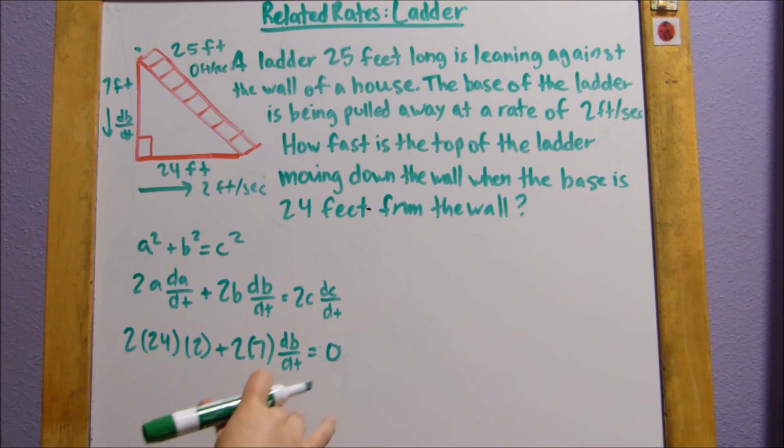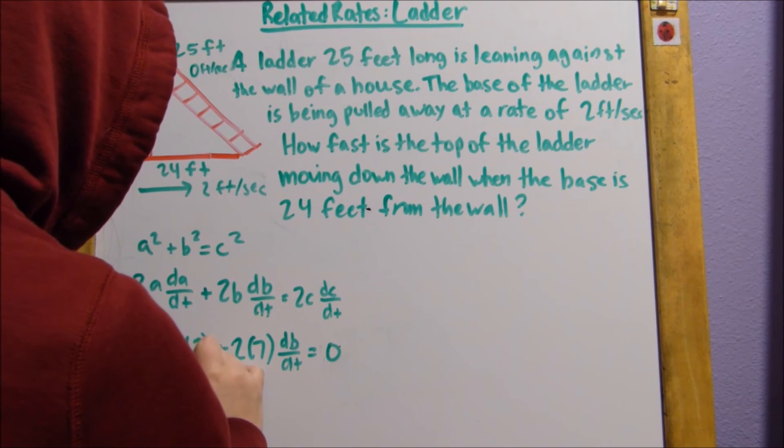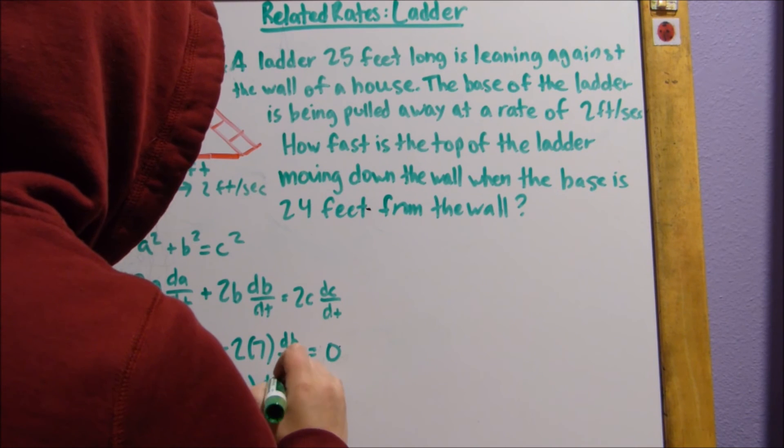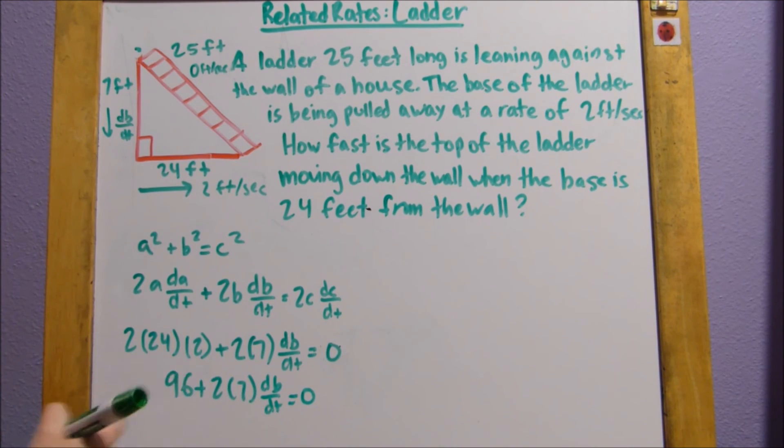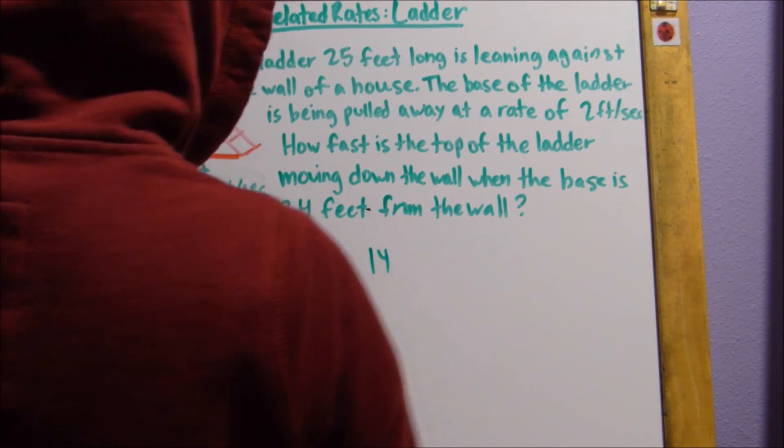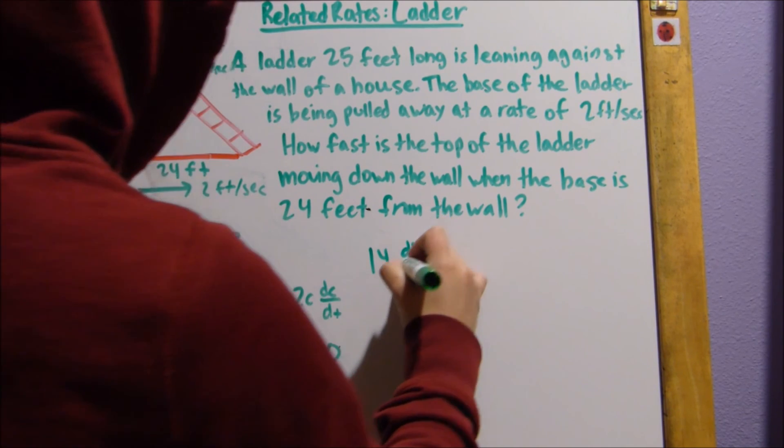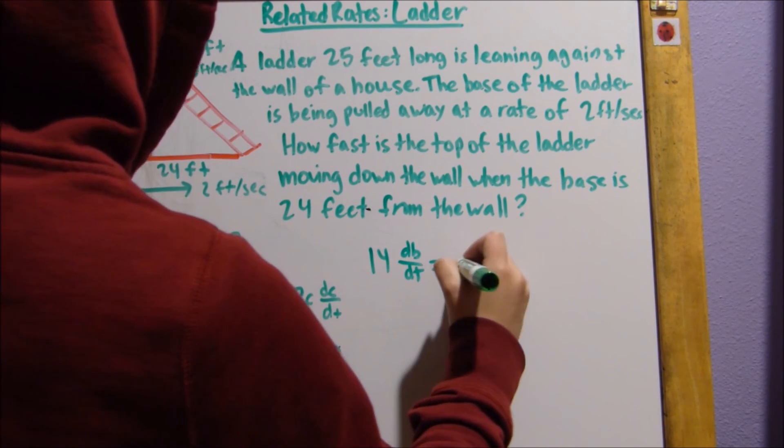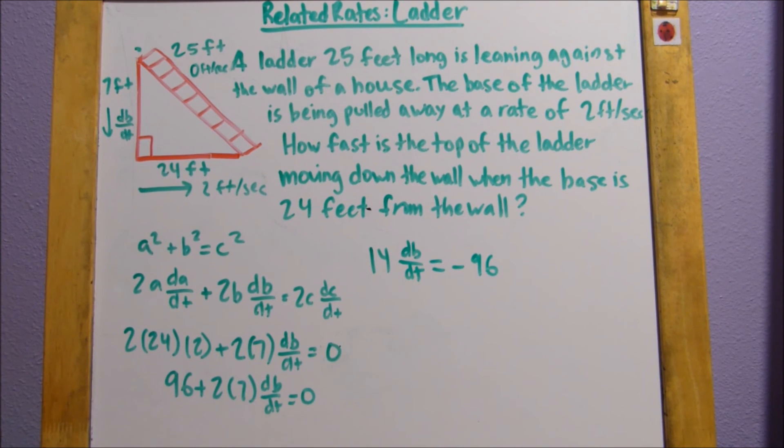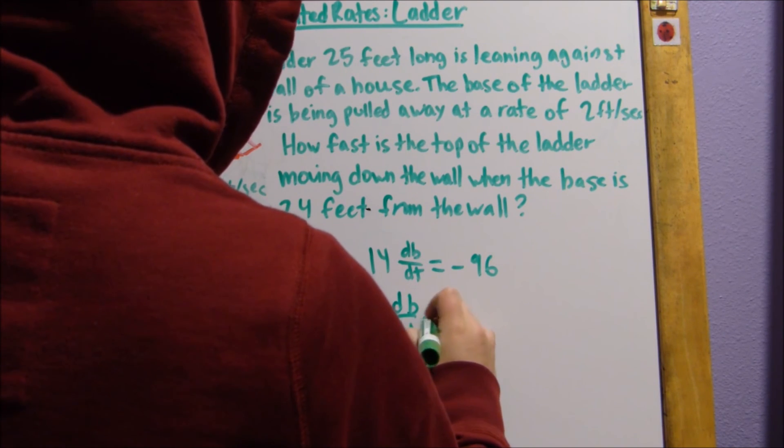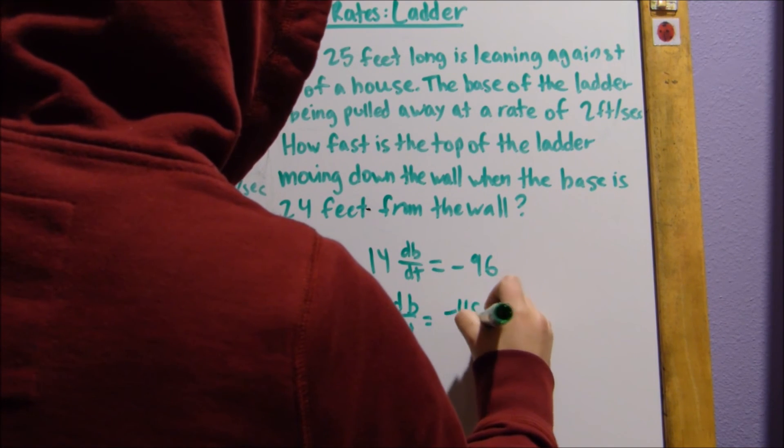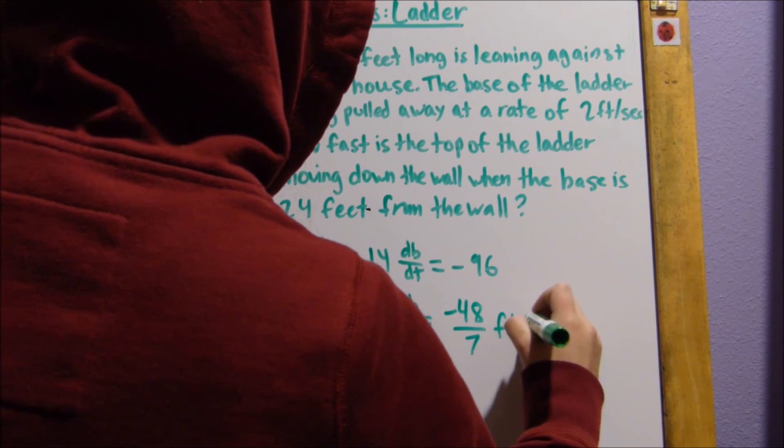So, now that we have all of this, we're just going to solve for dB/dt. So, let me just plug in these numbers. We end up getting 96 plus 2 times 7 dB/dt equals 0. I'll subtract 96 to the other side. So, multiply 2 times 7 to get 14. 14 dB/dt equals negative 96. And now, I can just divide negative 96 by 14 to get that our rate is negative 48 divided by 7 feet per second.